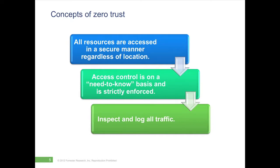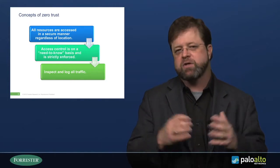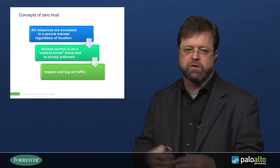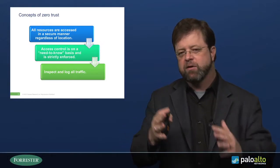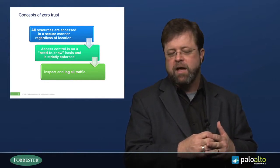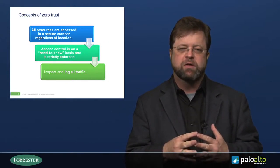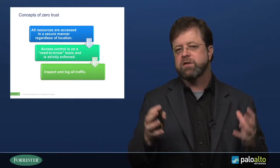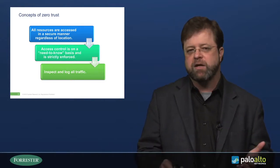Second, we need to enforce access control in a granular manner on our networks. If you look at the Bradley Manning attack, the WikiLeaks attack, that's an access control attack — it happened because there was poor access control. And then finally, we have to inspect and log all traffic on our network, not just on our perimeter. Once an attacker bypasses our perimeter, they become a trusted user in the old network model, and therefore they're allowed to do whatever they want on that trusted network. By adopting Zero Trust and inspecting and logging all traffic, we can see that malicious traffic before it can be devastating to our business.